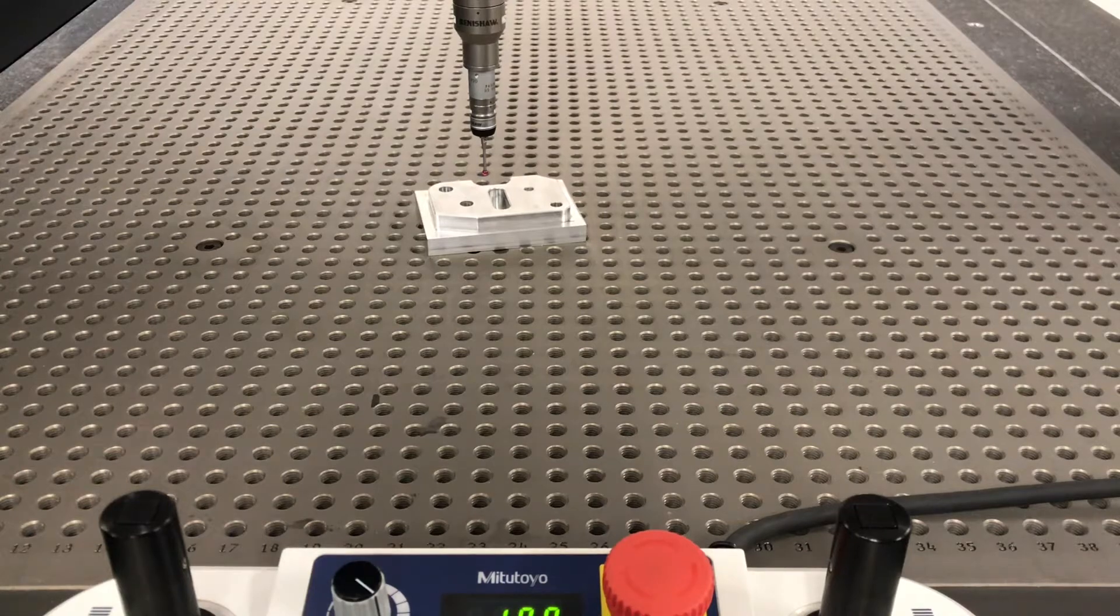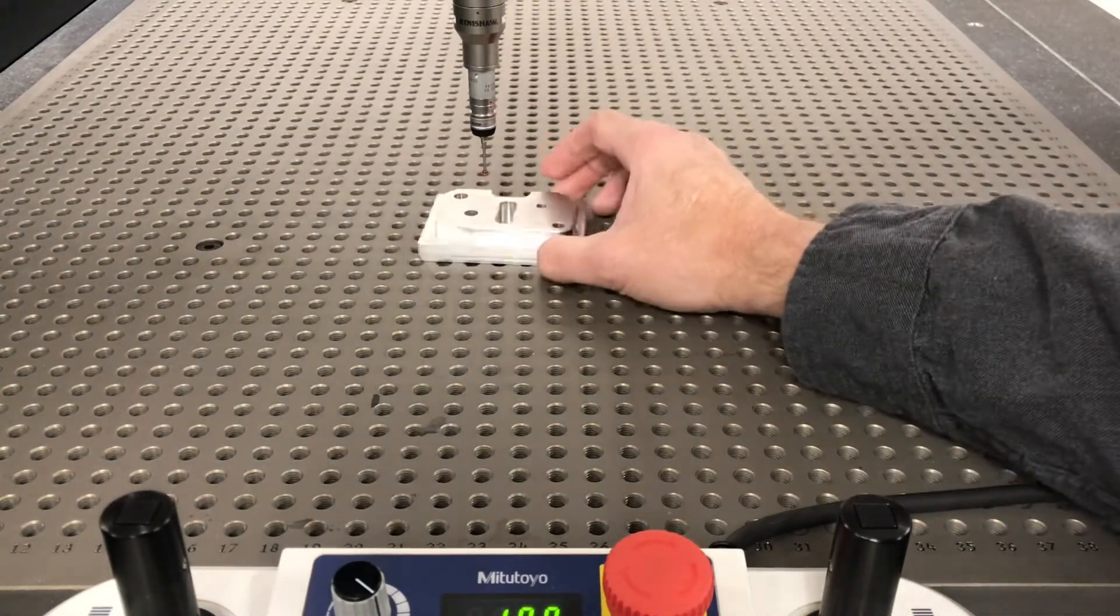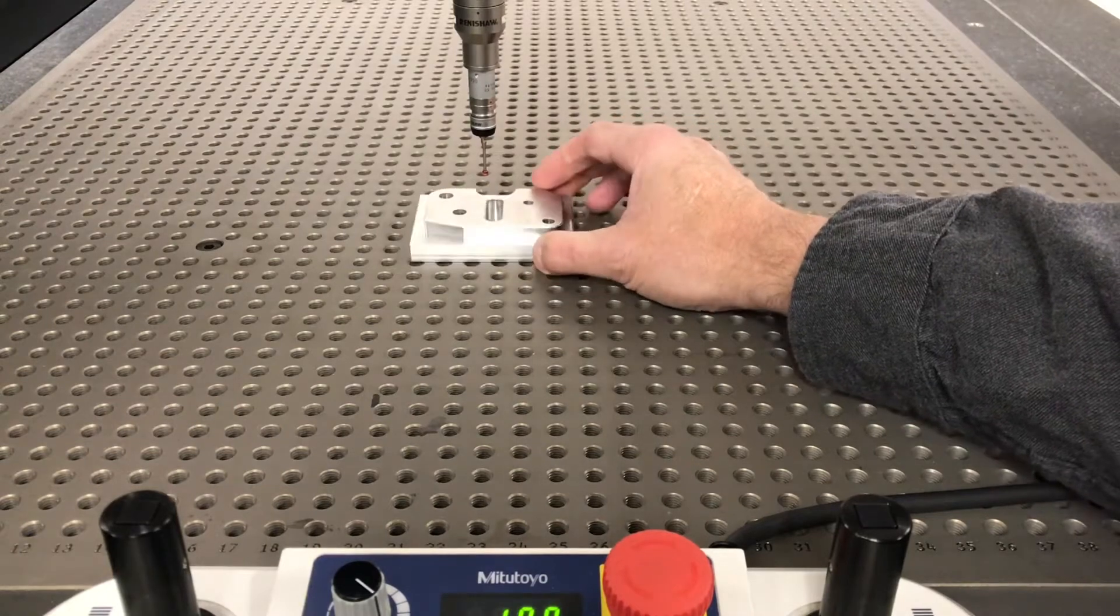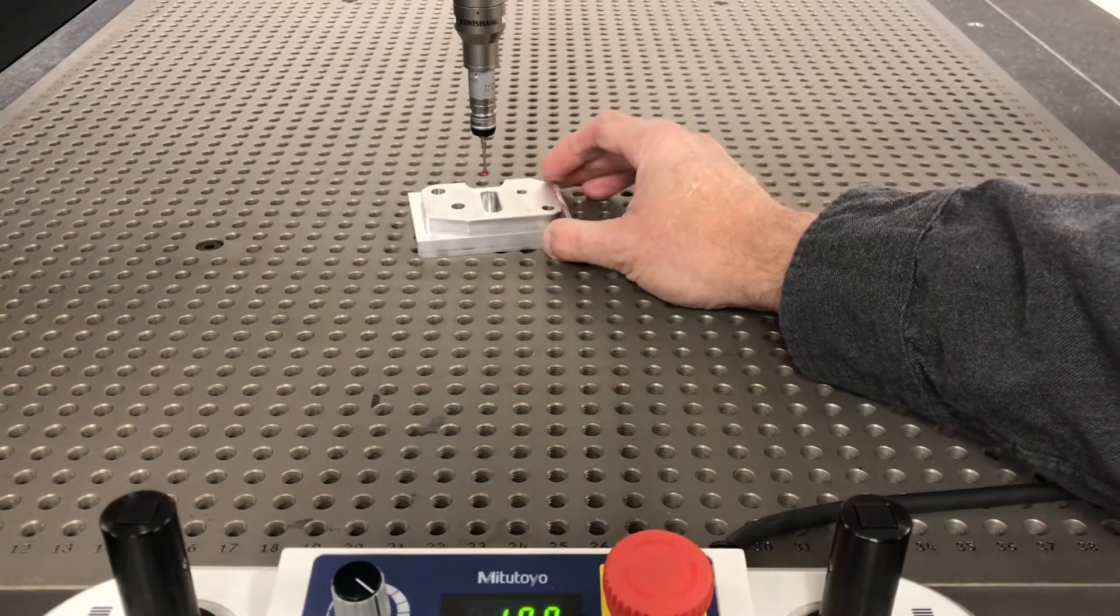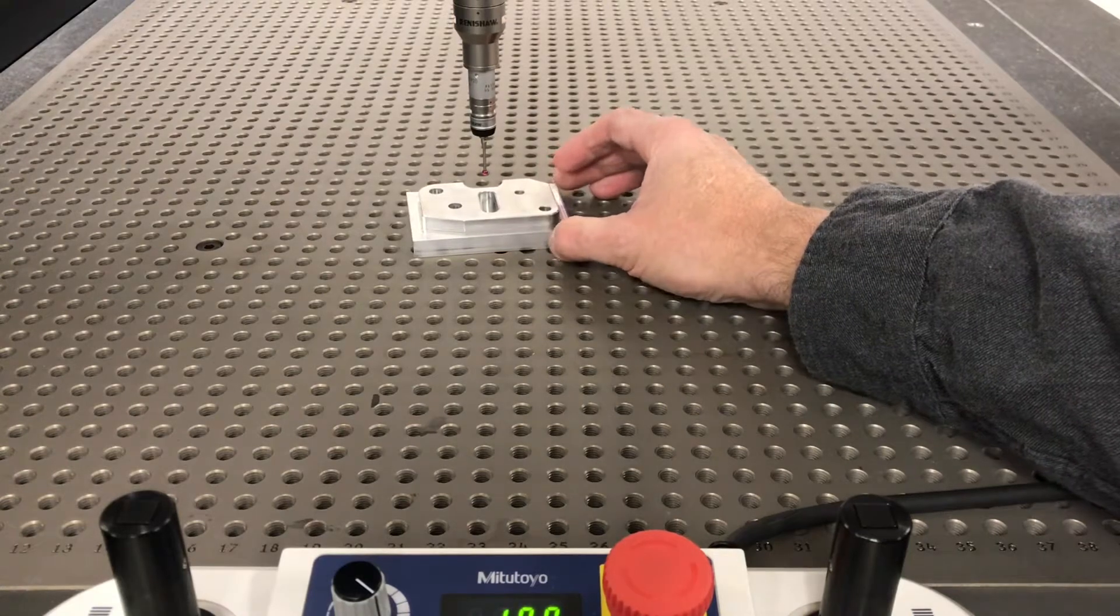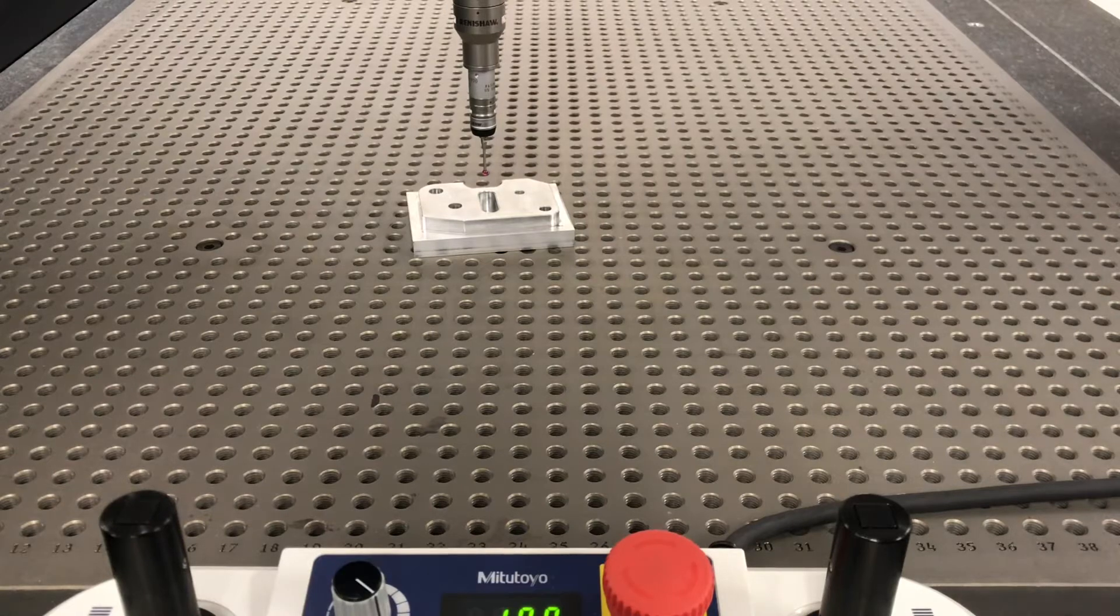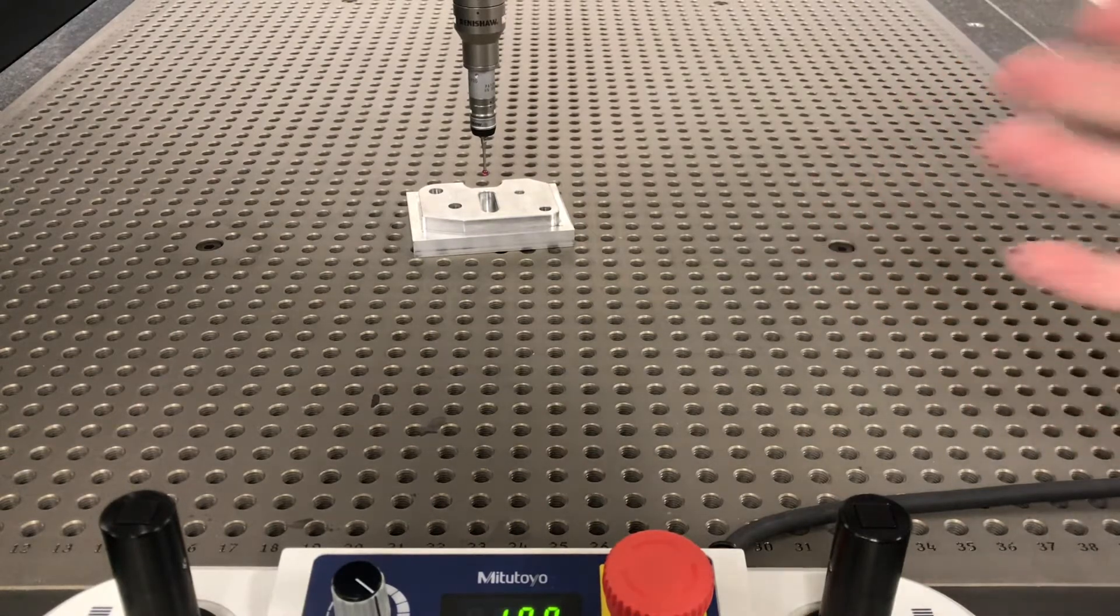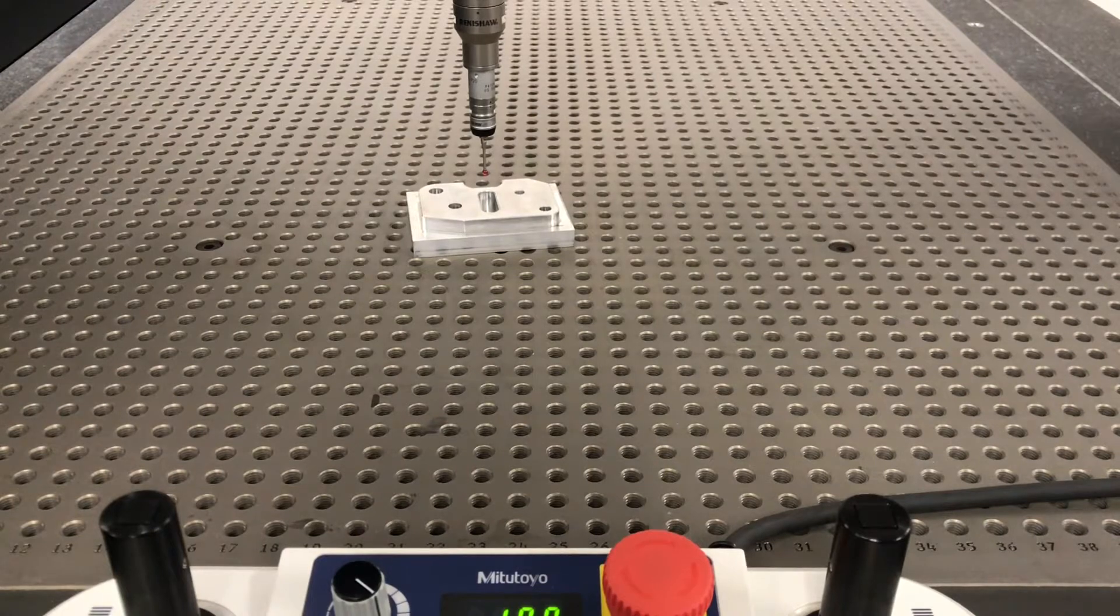So on a CMM you can set your part anywhere on here. It doesn't matter, crooked, you can try to set it as straight as you can, you don't need to. We're going to use the CMM to create, to basically indicate our vise per se. So we set our part and I've intentionally set it at an angle to prove to you what happens.